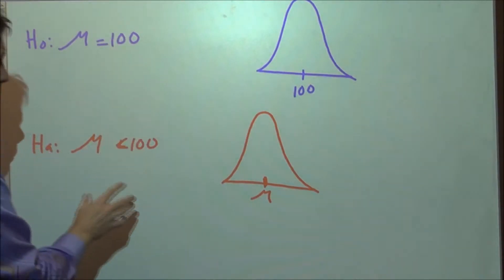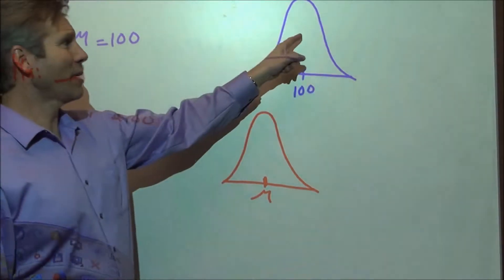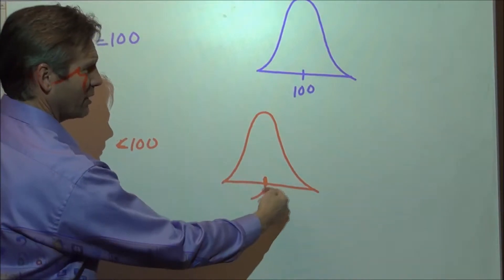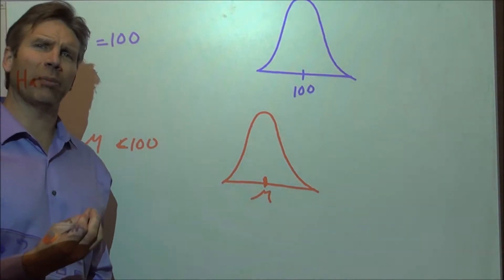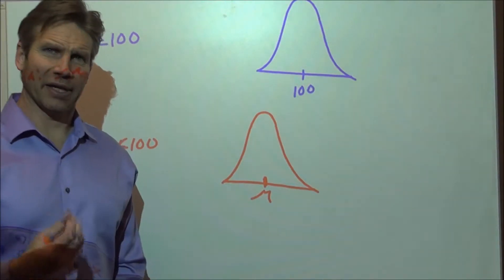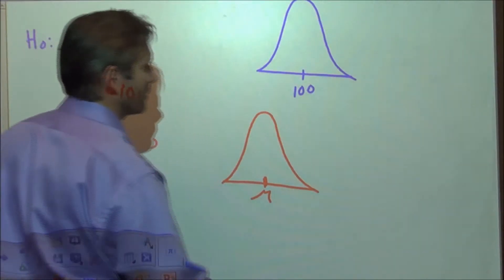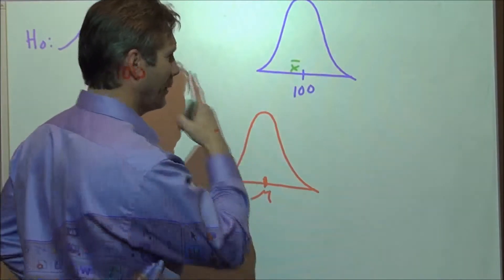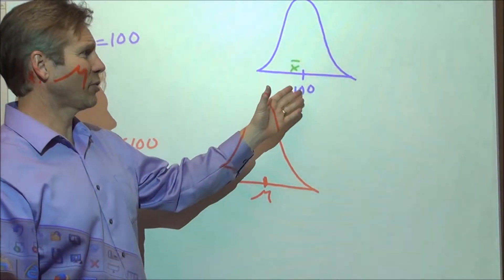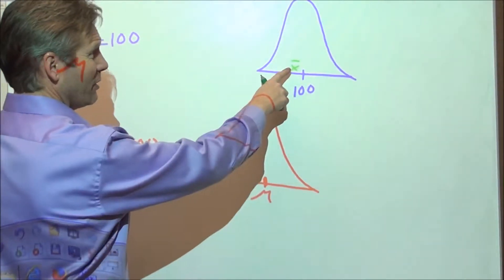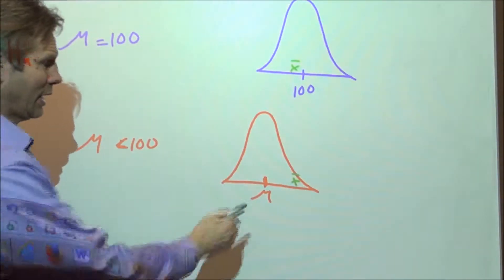Either the null is true or the alternative is true. Either that sampling distribution is correct, or there's a sampling distribution where the mean is somewhere below 100. We have to decide based on our one sample: is it suggesting the null is true or that the alternative is true? If we get a sample mean right about here — not very far below 100 — that's a very typical sample mean if the true mean is 100. It's more likely it comes from the null distribution rather than falling way at the upper tail.